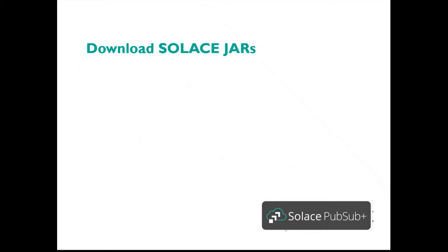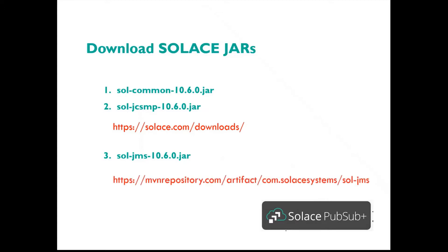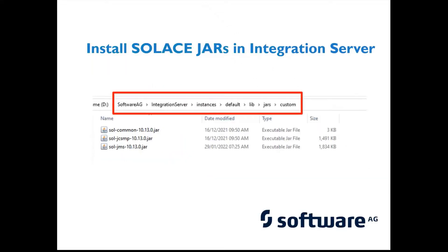So where do we get the jars from? The first two jar files we need to actually download from solace.com/downloads, and the Solace JMS jar we need to download from Maven. Where do we actually place the jar files? At any installation of your Integration Server, you would have a path of the Integration Server, followed by the instance name, a lib folder, then jar, and then custom. Within the custom folder you can place these three jar files. Once you have placed the three jar files, you go ahead and restart the Integration Server so that these jar files are picked up.